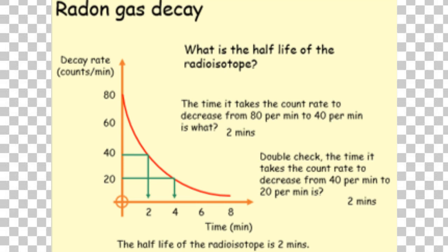Let's look at some graphs. On the first graph, look along the left-hand side — that shows the decay rate, the counts per minute. It starts at 80. The half-life is the time it takes to decay by half. Half of 80 is 40, so look along your graph: how long does it take to go from 80 to 40? Two minutes — read off the bottom.